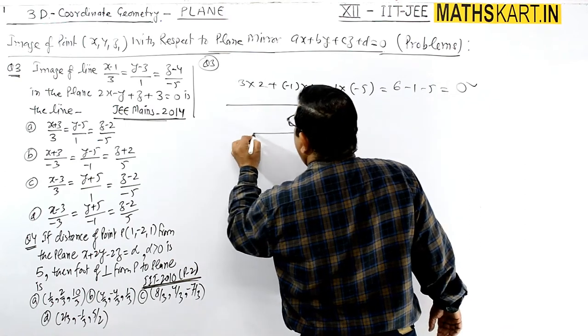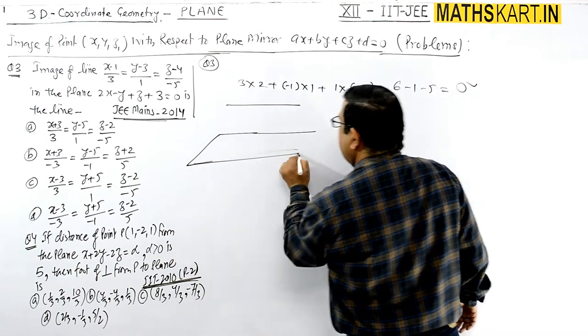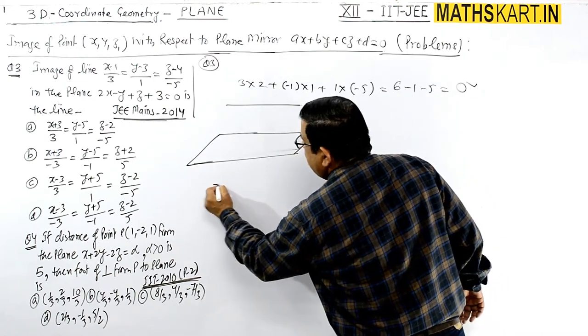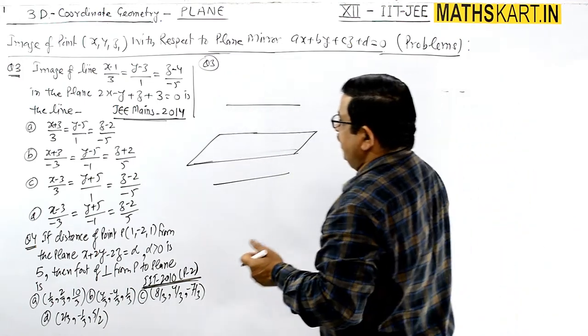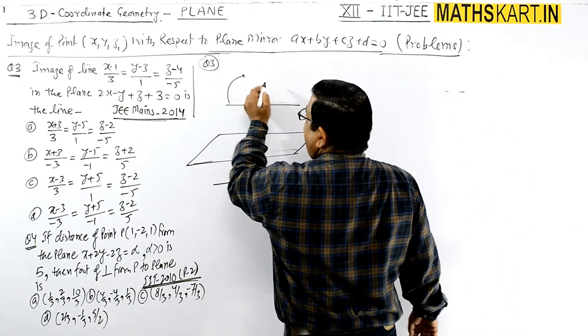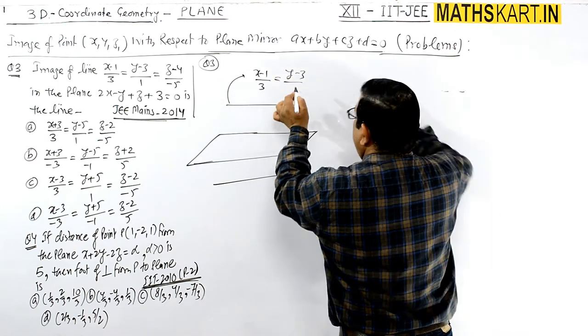The line's position is like this - the plane is here. Now the work becomes easier. We have to find out the image. This line's image has to be found.